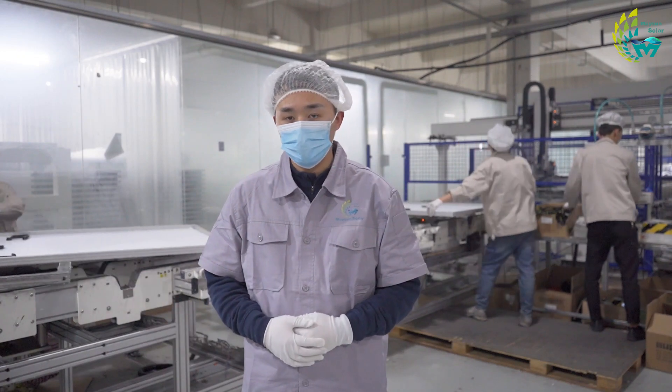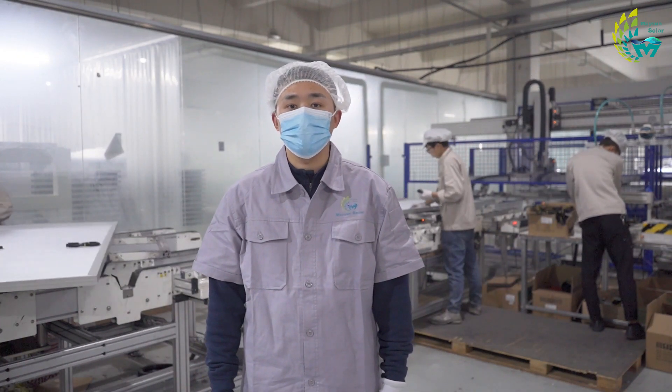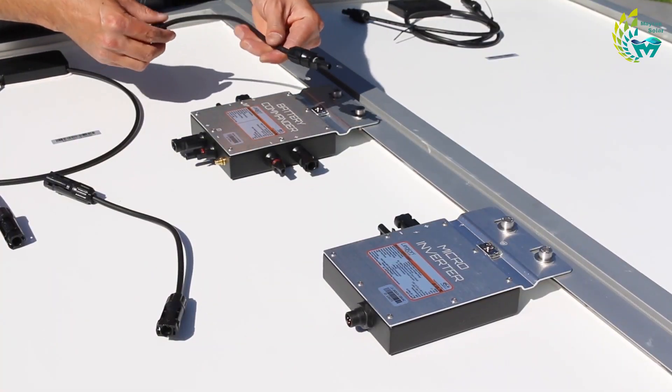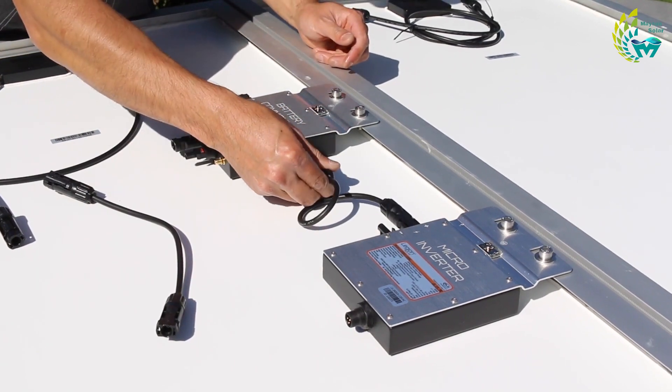The basic function is to connect PV modules and loads, and the additional function is to protect module lead wires from hot spot effect. The junction box acts as a connector to draw the current generated by the solar module and direct it to the power using equipment.